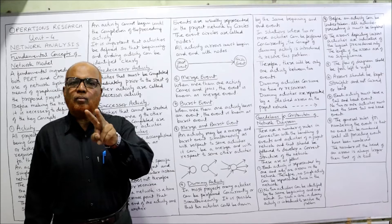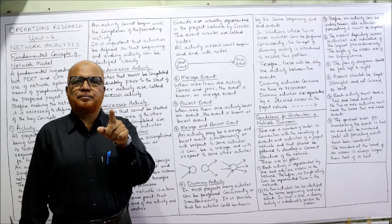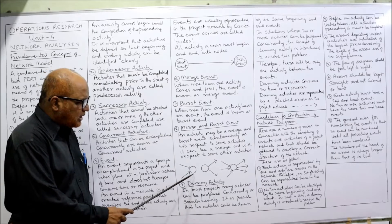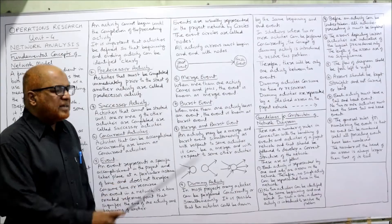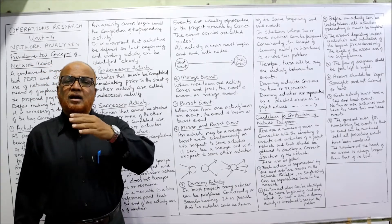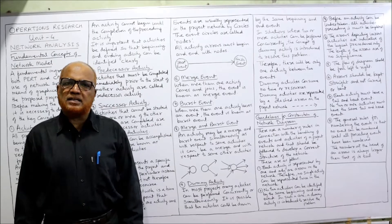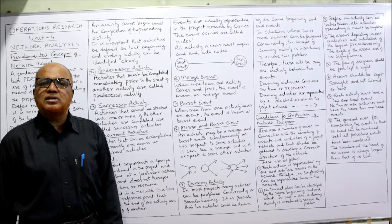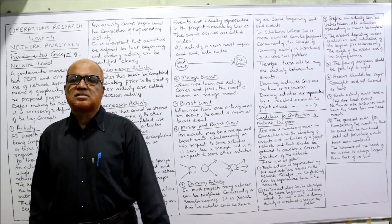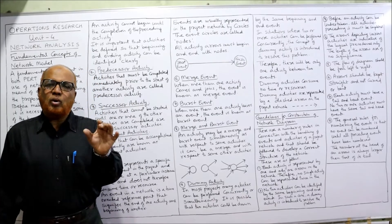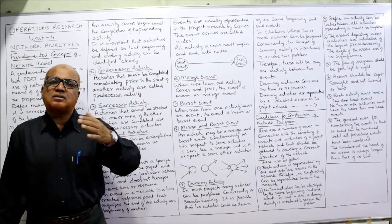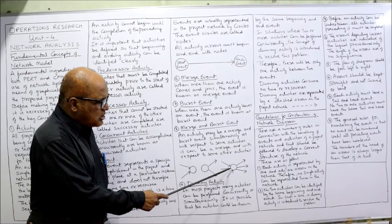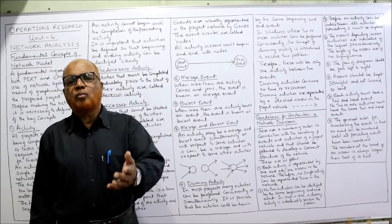A merge event is when two or more activities come and join an event. You can see here — two activities are merging into this event; this is called a merge activity. A burst activity is when two or more activities come out from an event — the event bursts into multiple activities. A merge and burst event is when two or more activities are merging simultaneously and two or more activities are also bursting from the same event.